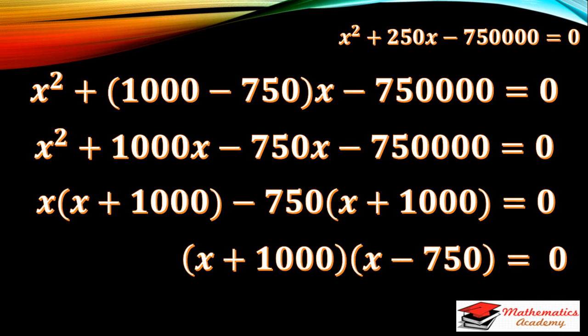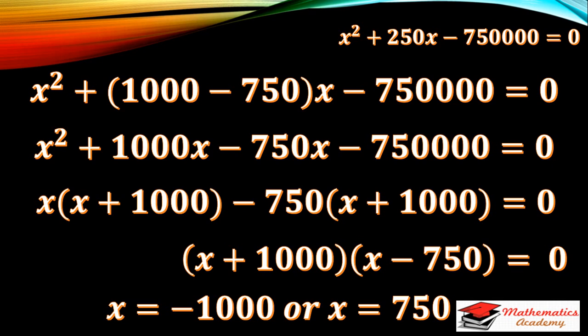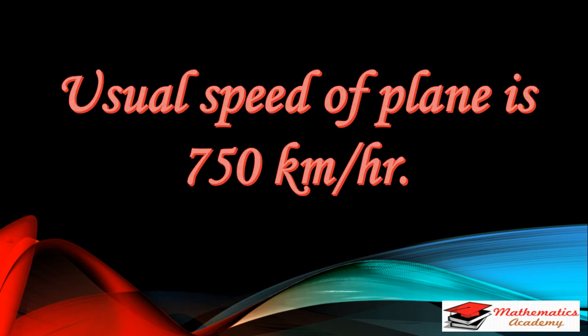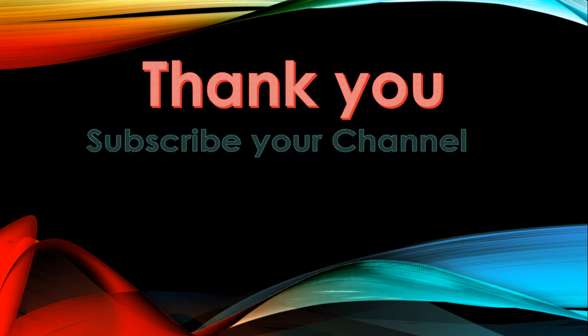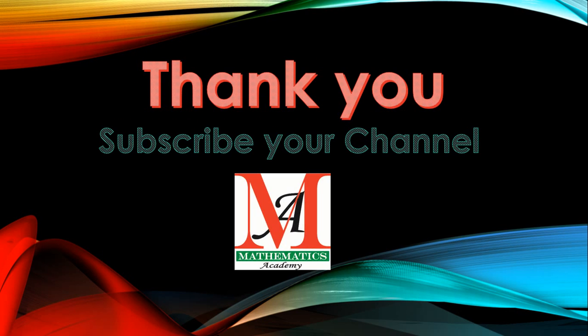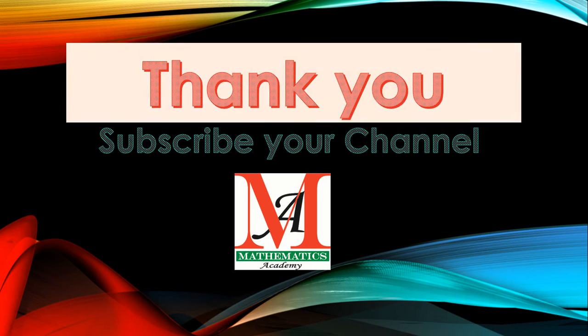Equating each factor to zero, we get X equals negative 1000 and X equals 750. Since speed cannot be negative, that solution is neglected. Therefore, the usual speed of the plane is 750 km per hour. Thank you, and please subscribe to the channel Mathematics Academy.